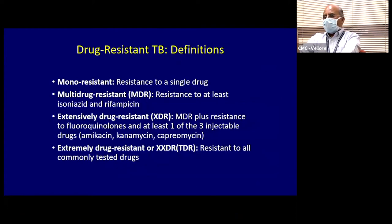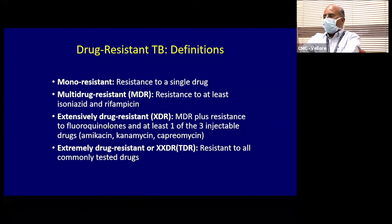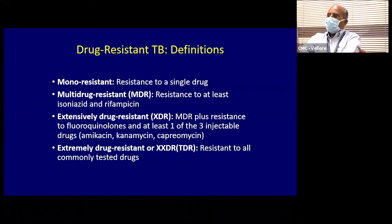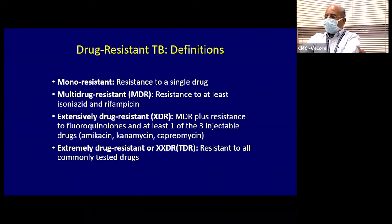When talking about drug-resistant TB, be familiar with the terminology. Mono-resistant TB means resistance to one drug — INH mono-resistance is most common. MDR-TB is resistance to both INH and rifampicin. XDR, or extensively drug-resistant tuberculosis, is MDR plus resistance to fluoroquinolones and at least one injectable agent: amikacin, kanamycin, or capreomycin. The term TDR or XXDR refers to resistance to all commonly tested drugs, though this is becoming redundant as newer effective drugs emerge.